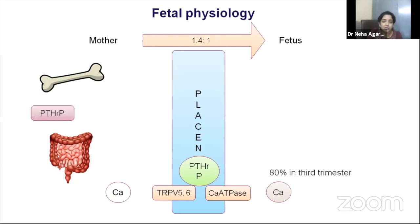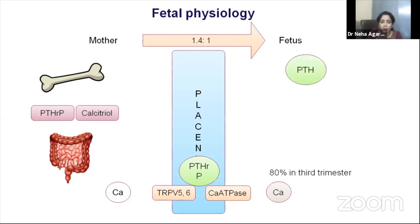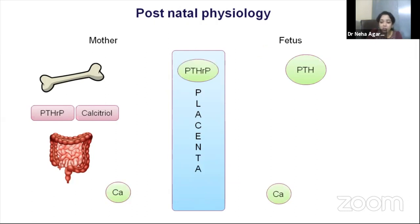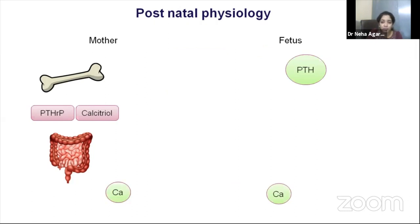During early pregnancy, PTHrP is also produced in the mother, ensuring calcium movement from bone to blood. In the later half of pregnancy, increased vitamin D production ensures increased gut absorption of calcium, maintaining normal bone health in the mother. The fetus also has its own PTH axis, and after delivery, when maternal calcium transfer shuts down, the fetal PTH axis takes over.